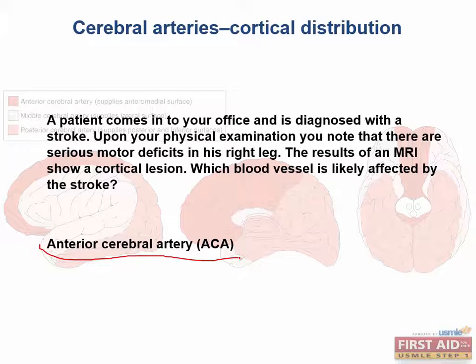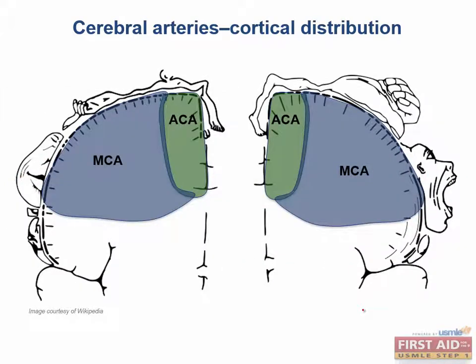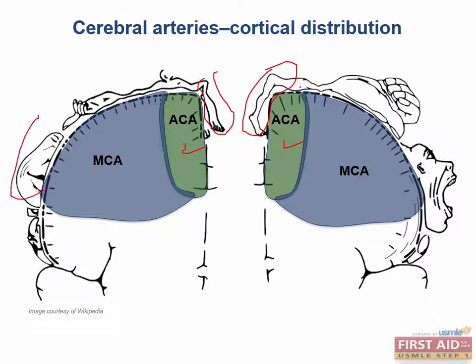The key is that there are motor deficits in his right leg. Now if you look at the homunculus, it becomes clear that the area of the motor and somatosensory cortex responsible for the lower extremities lies in the region supplied by the ACA. This type of question is a favorite with board examiners. So make sure you study the map of the homunculus so you have an idea in your head where the representation of different body parts are in terms of the cortical blood suppliers.